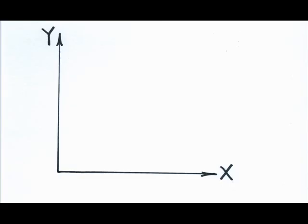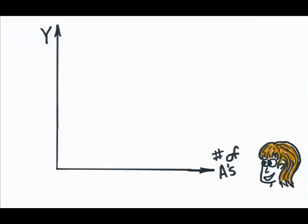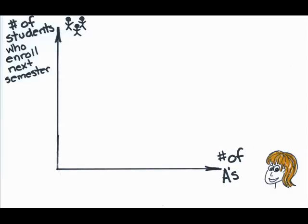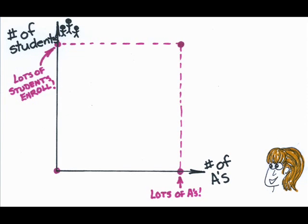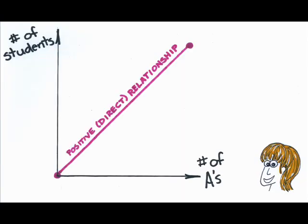Let me give you an example. Instead of X, what if I have the number of A's that Dr. McGlasson gives this semester? Instead of Y, I have the number of students who enroll for the class next semester. If I never give an A, people aren't going to be very anxious to sign up for my class and I'm going to have very low enrollment. If I give lots of A's, however, the class gets to be very popular and lots of students enroll. So I see that there is a positive or direct relationship between the number of A's that are given and the number of students who enroll for the class in the future.